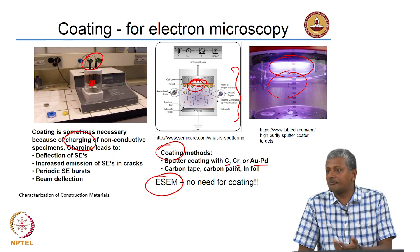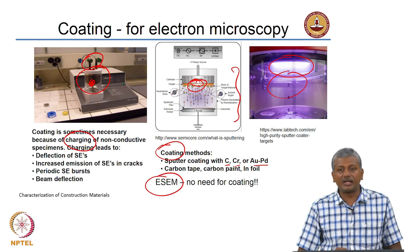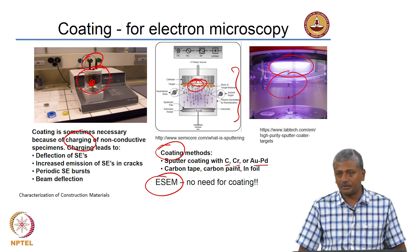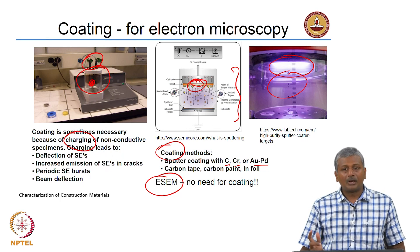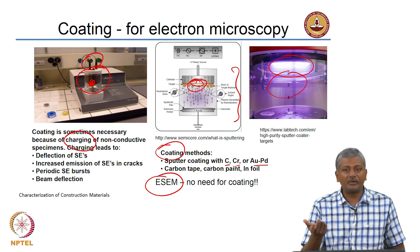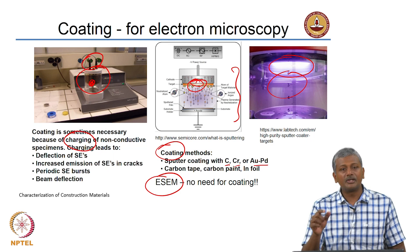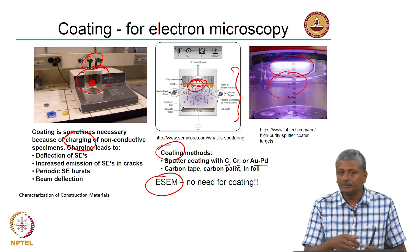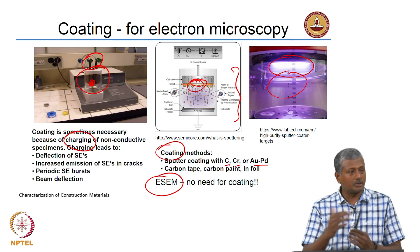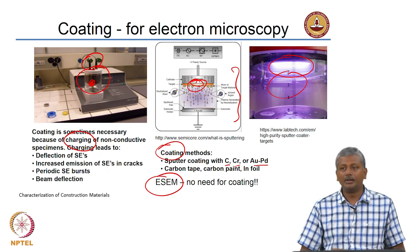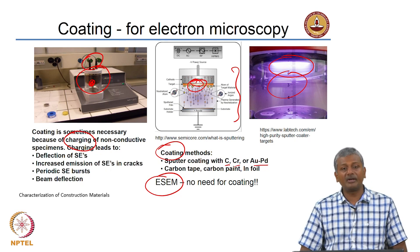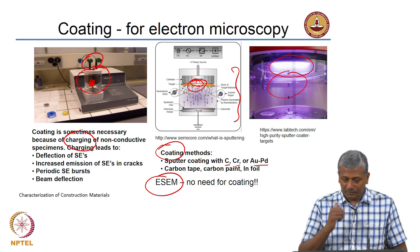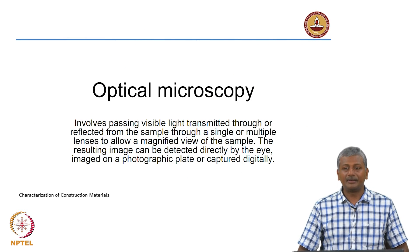You cannot coat wet objects either, since the coating chamber also requires high vacuum. For cementitious materials, to prepare samples for most microscopy techniques you need to stop hydration or remove moisture from the sample. This can be done by oven drying, freeze drying, or solvent exchange, where water is replaced by a solvent that then volatilizes. Only dry samples are used for microscopy unless you use environmental SEM, which can accommodate wet samples. We will stop here and move on to optical microscopy in the next class.